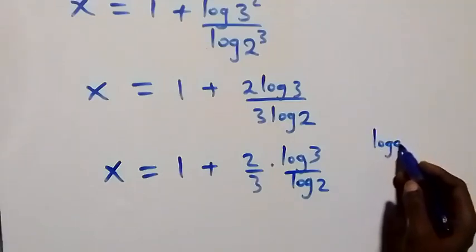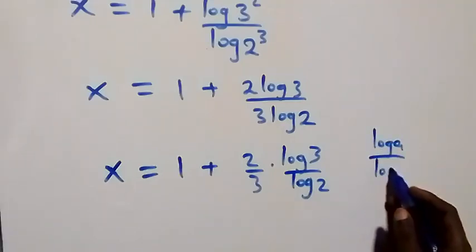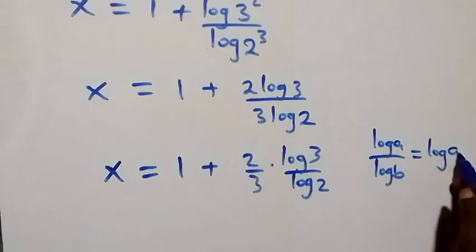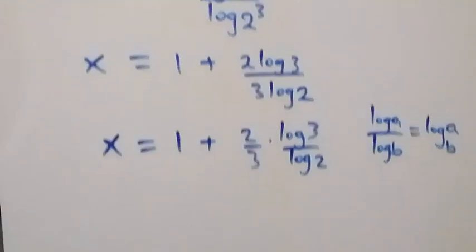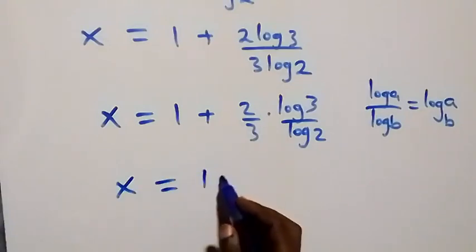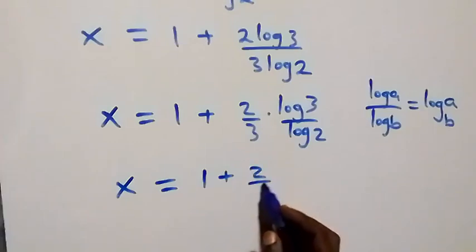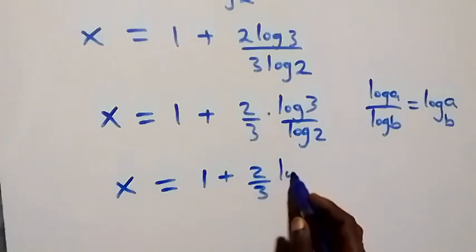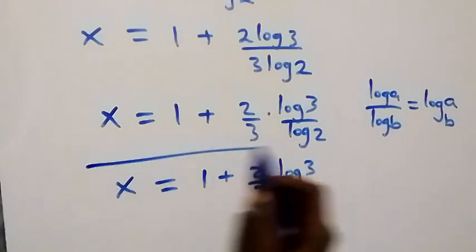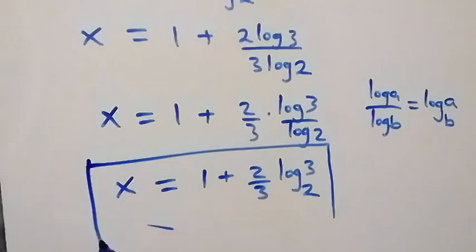Applying the change of base formula, log a over log b can be written as log a to base b. So log 3 over log 2 becomes log 3 to base 2. Therefore the value of x is 1 plus (2 over 3) log 3 to base 2.